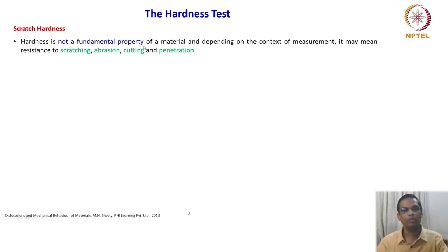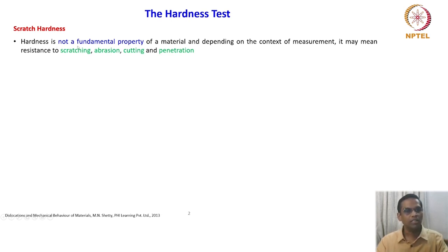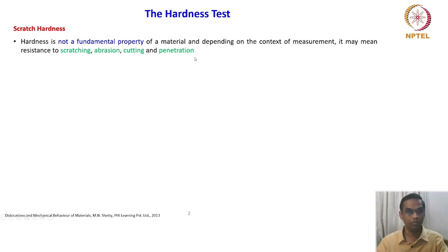Before getting to scratch hardness, let us see what hardness is. Hardness is not a fundamental property — it is not like Young's modulus, shear modulus, or Poisson's ratio. However, it is very important in the context of engineering applications. Hardness is not a fundamental property of the material, and depending upon the context of measurement it may mean resistance to scratching, abrasion, cutting, or penetration. These are the attributes: resistance to scratch, resistance to abrasion, resistance to cutting, or resistance to penetration.